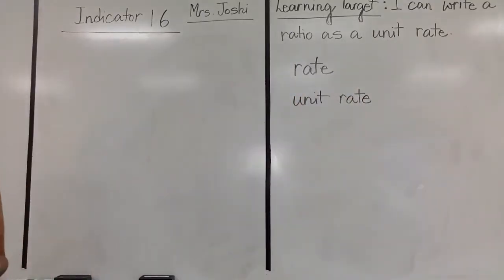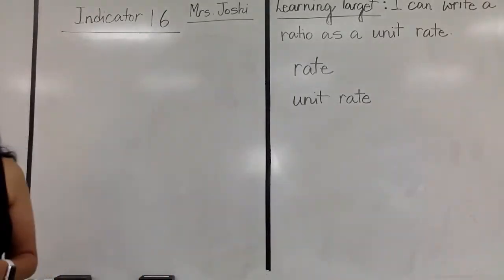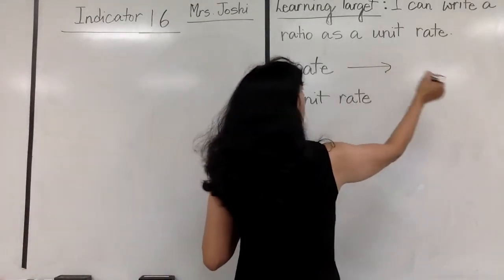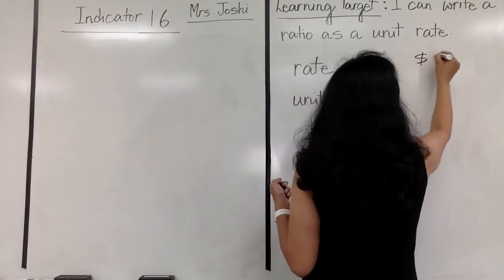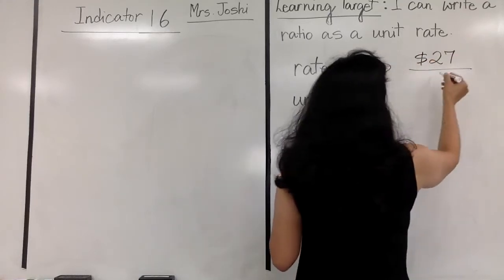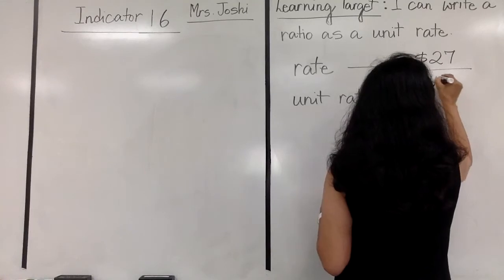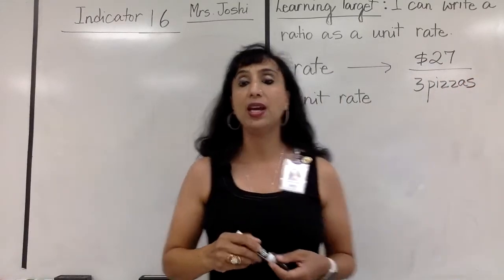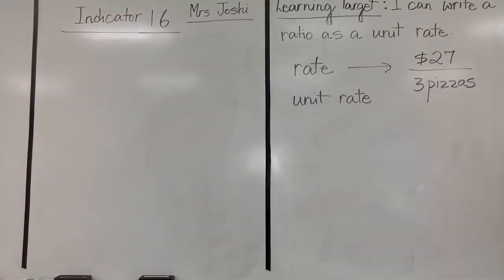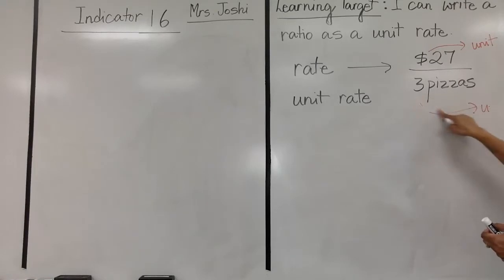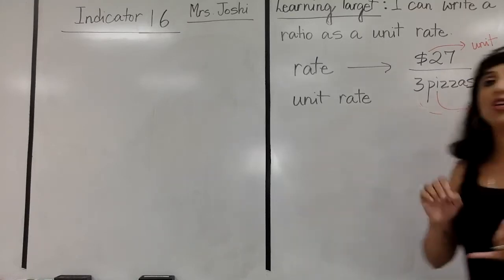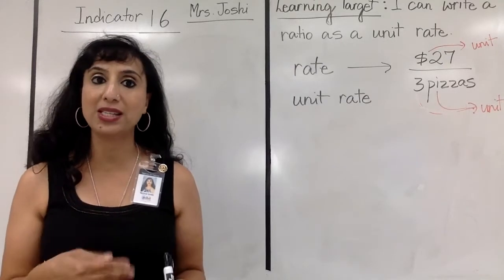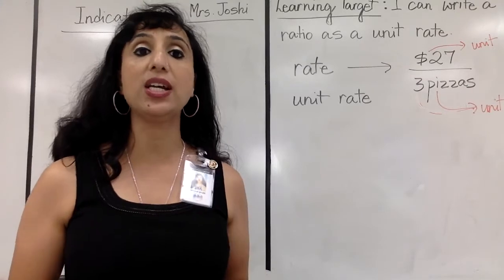Rate is a ratio of two quantities using different units. For example, $27 for three pizzas - the dollar and the pizza are different units. So therefore, we know that this is a rate. In a rate, you have got to place the units. That's what makes it different from just a ratio - a rate has a unit attached to it when you're comparing. Miles per gallon is another example.